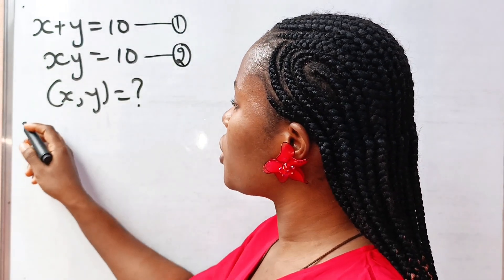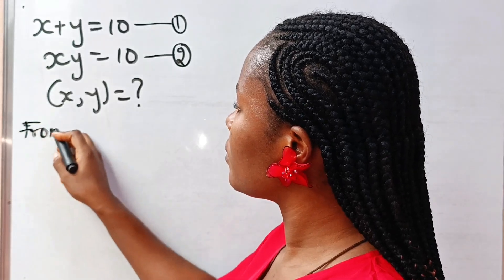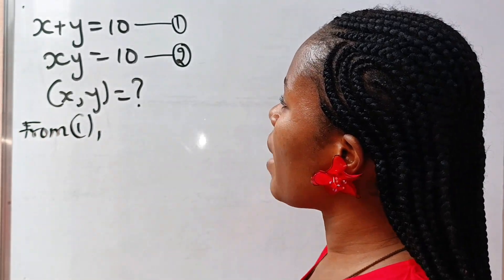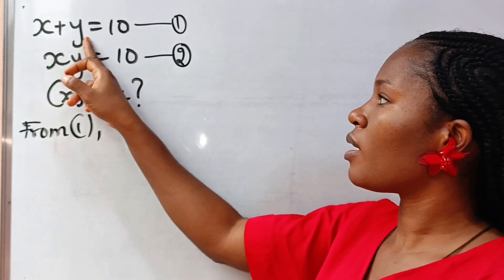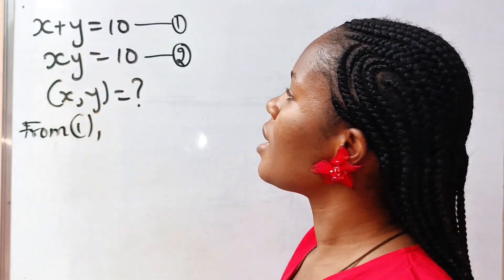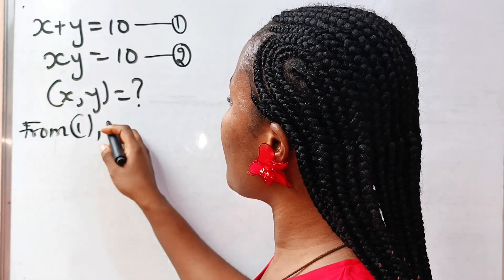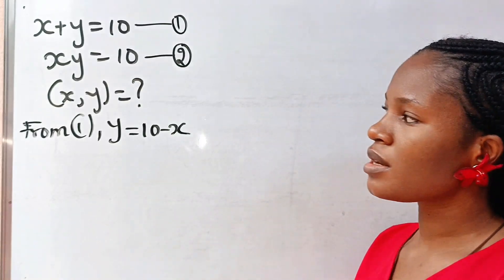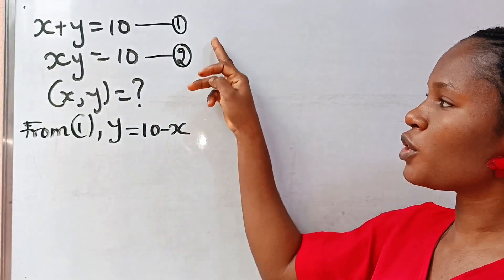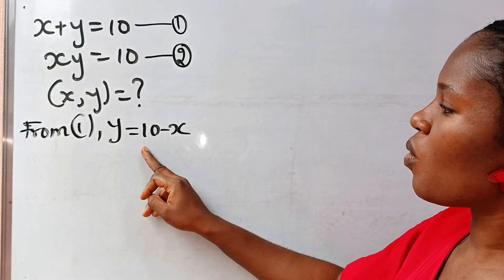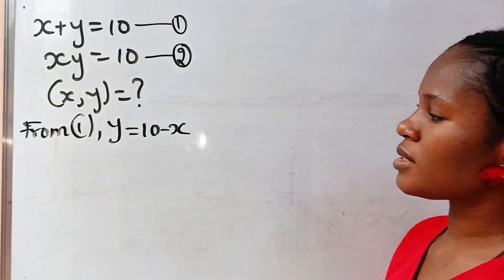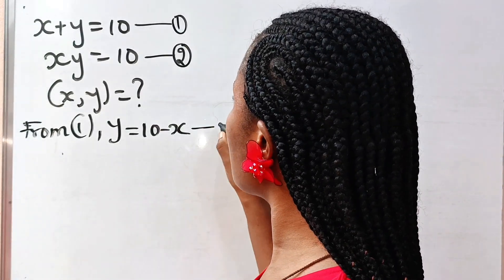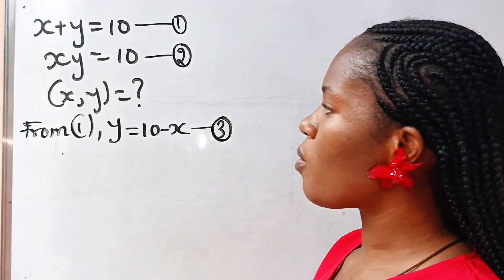From equation 1 we can make y the subject of the formula, and if we do that we are going to have that y is equal to 10 minus x. From equation 1, y is equal to 10 minus x. We'll call this equation 3.